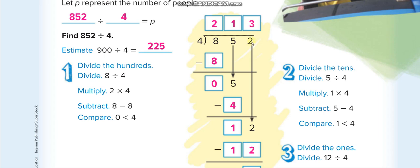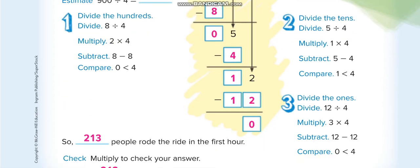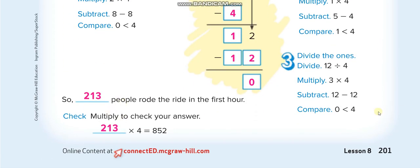It's turn for the third one. Bring the 2 down with this 1, it becomes 12. We'll check: 4 times what will give you 12? So 4 times 3 is equal to 12, and 12 minus 12 is 0. So the remainder is 0 and the quotient is 213. Here they are checking their answers.